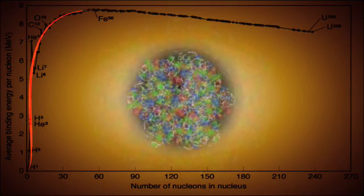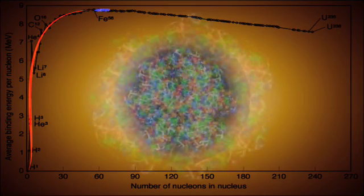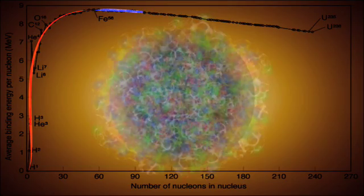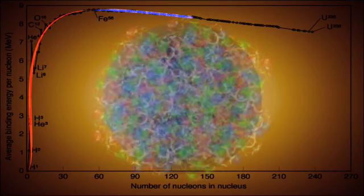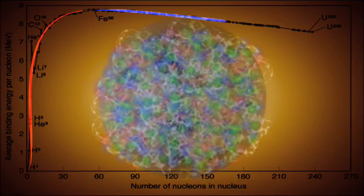So as we add nucleons past this point, the electric force trying to tear the nucleus apart starts winning, and each added nucleon is a little less tightly bound.